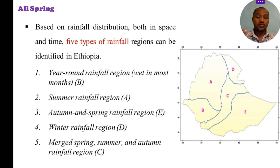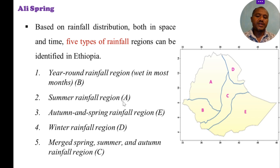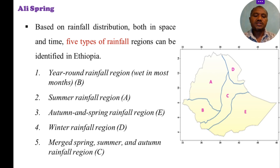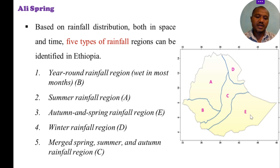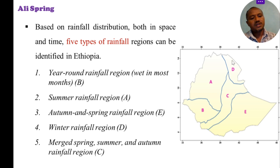Almost all of the rainfall regions can be identified. The summer rainfall region is almost a year-round type, representing a distinct seasonal pattern across the country.